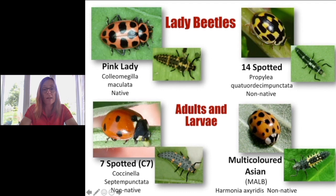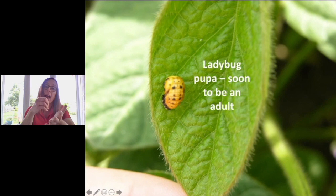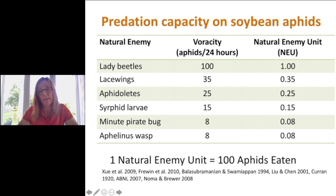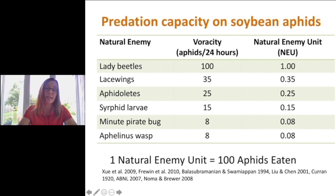If you see what looks like a ladybug stuck to a plant, that's actually the ladybug pupa — it's a resting state, and they stay there until they molt into an adult. Work done here in Ontario figured out how many aphids these predators can consume in a day. Ladybeetles, on average, feed on 100 aphids a day, some even more — multicolored Asian ladybeetles can eat up to 400 a day. Lacewings, midge larva, and syrphid larva are also heavy hitters when it comes to predators — especially for aphids, but they also feed on caterpillars.